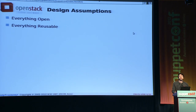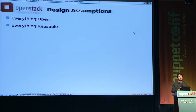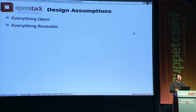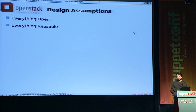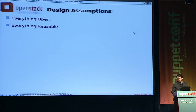We have a few design assumptions in the OpenStack CI system: everything that we do should be open. We want as little secret information as we can, and we want as few things inaccessible to our entire community as we can. Also, even though this is just the stuff supporting the support systems for the project, we really don't like writing stuff that isn't reusable by other people.